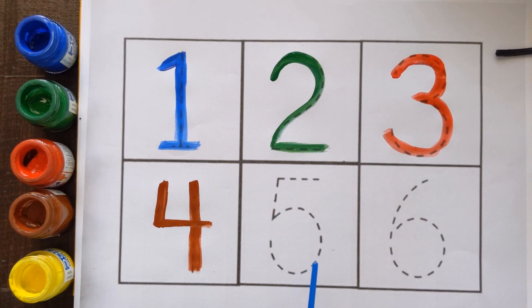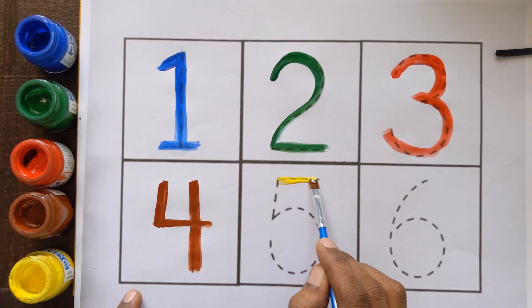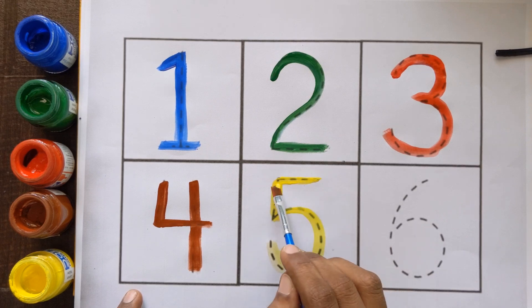After number 4, which number is this? Can you tell me? It's a number 5 with the yellow color.